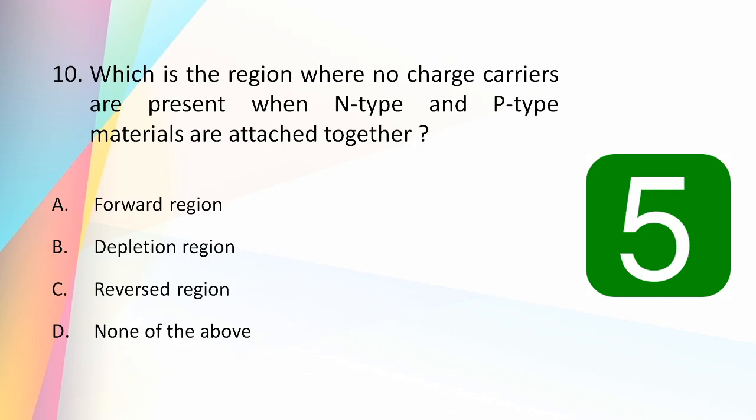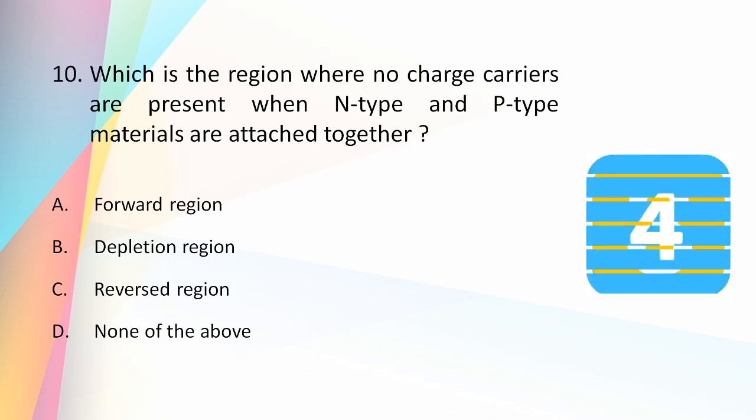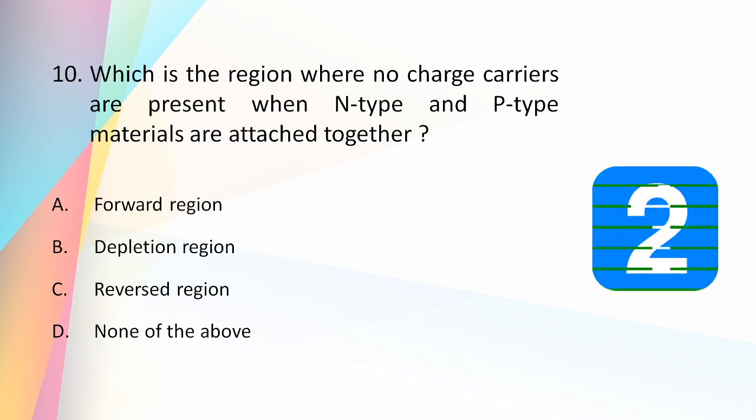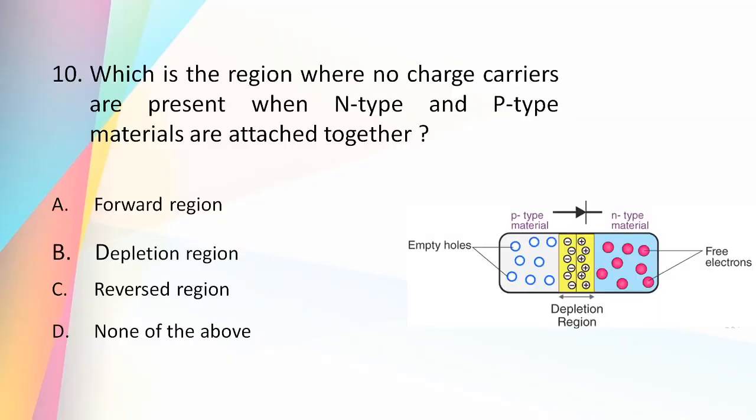The depletion region is the region where no charge carriers are present when N-type and P-type materials are joined together. When the two materials are attached, a momentary flow of electrons occurs from N to P side and holes from P to N side, resulting in a region with no charge carriers called the depletion region.